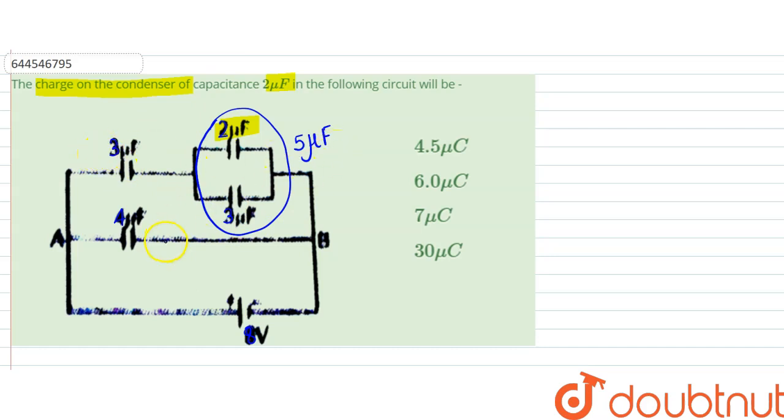So it would be 3 into 5 by 3 plus 5, that is the equivalent plus 4, so that gives us the value that is 15 by 8 plus 4.